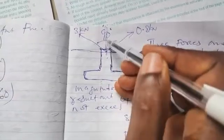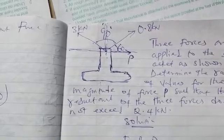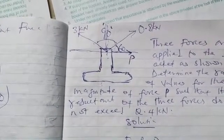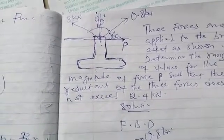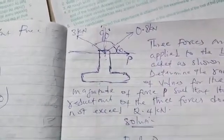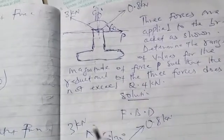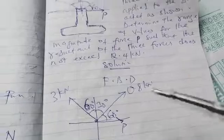From this point to where the 3 kilonewton force is acting, it is 30 degrees from the Y axis, meaning 60 degrees from the X axis. So 60 plus 30 gives us 90 degrees — consistent with what we have in the problem. Here is 30° and here is 60°, and these are the 3 kilonewtons force. That's our free body diagram.